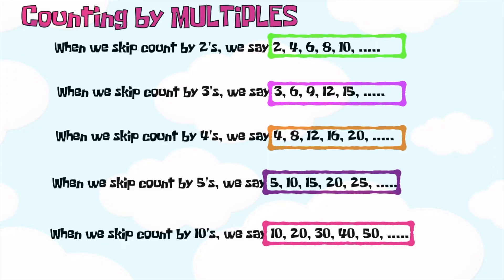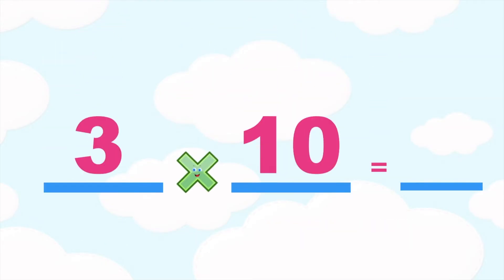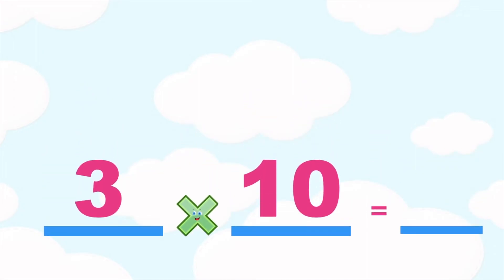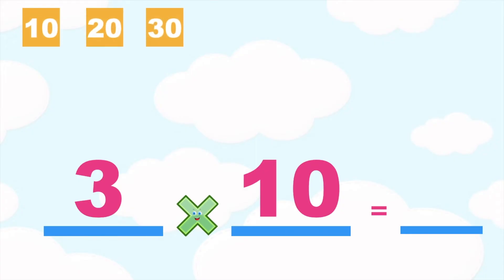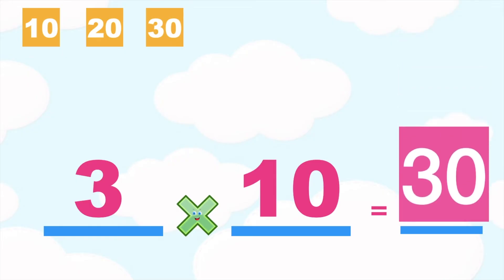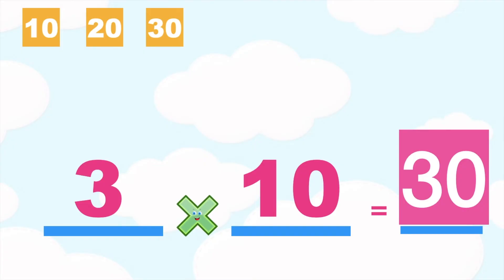So, let's use the multiples to find the product. Let's have this: three times ten is equal to blank. We're going to skip count by ten until we reach the third multiple: ten, twenty, thirty. Since thirty is the third multiple, the answer is thirty. Three times ten is equal to thirty.